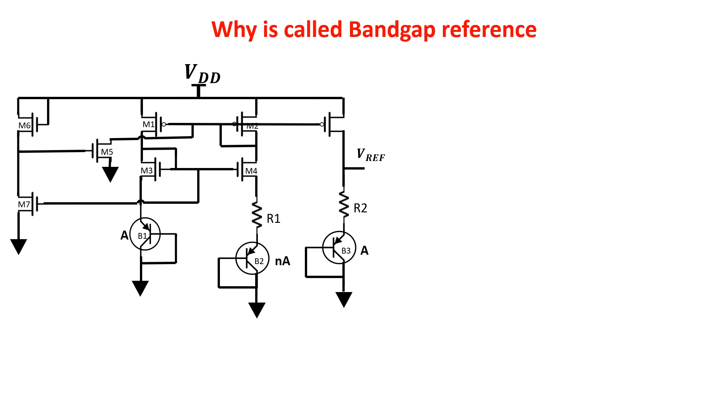Now we see why it is called bandgap reference. The heart of the circuit is given by this relationship and we want a variation with respect to temperature is equal to zero. Remembering this relationship we get this identity. So VT log N is equal to this. Putting this relationship in the first equation we get that Vref is this.